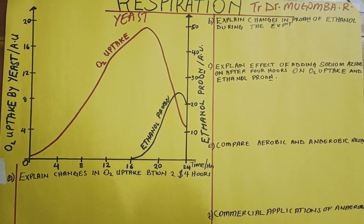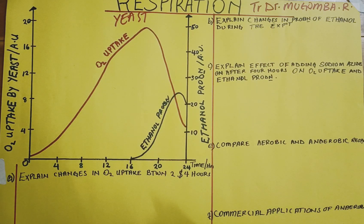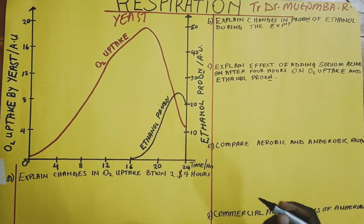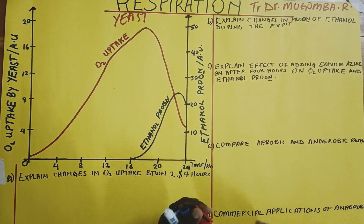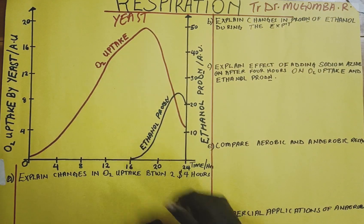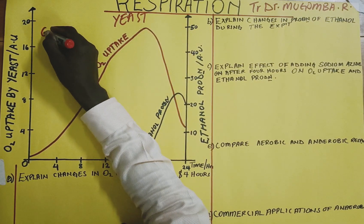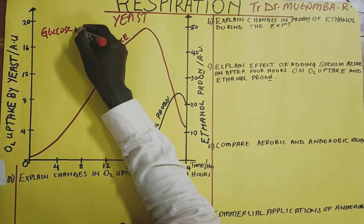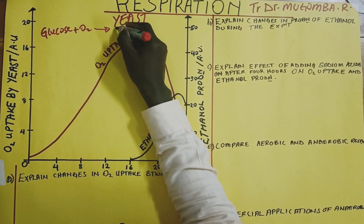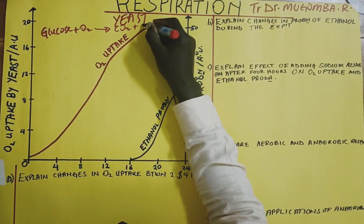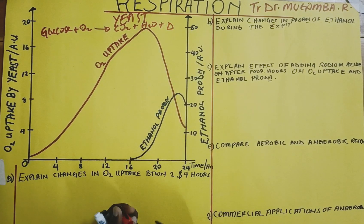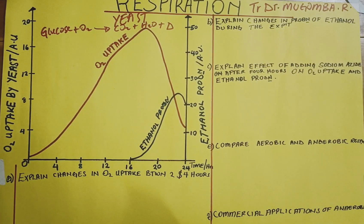We know that yeast cells are able to carry out respiration aerobically and anaerobically depending on the conditions available. From our previous knowledge, respiration involves oxygen being used to break down glucose - glucose in the presence of oxygen produces carbon dioxide, water, and energy. This is what basically happens during respiration and is the major factor responsible for oxygen uptake by yeast cells.